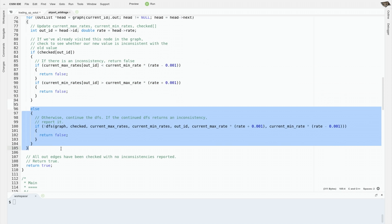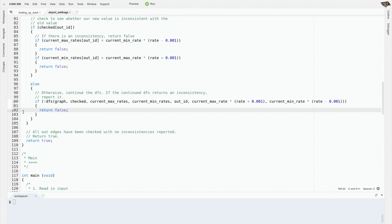If it hasn't already been checked, we'll check it by recursing and doing depth first search on it as well. We'll call depth first search again, passing it the pointer to our checked array and our max and min rates array so that it has access to the same information, and giving it and telling it that the amount of money that it can have, maximum and minimum, is our current maximum times a little bit more than the given rate, and the minimum is our current minimum times a little bit less than the given rate. If it reports an inconsistency, then we'll report an inconsistency too.